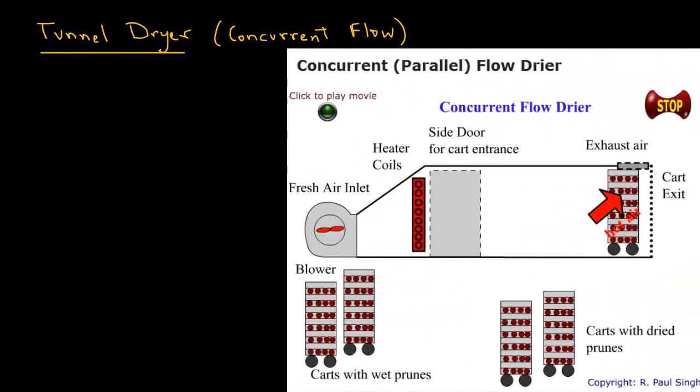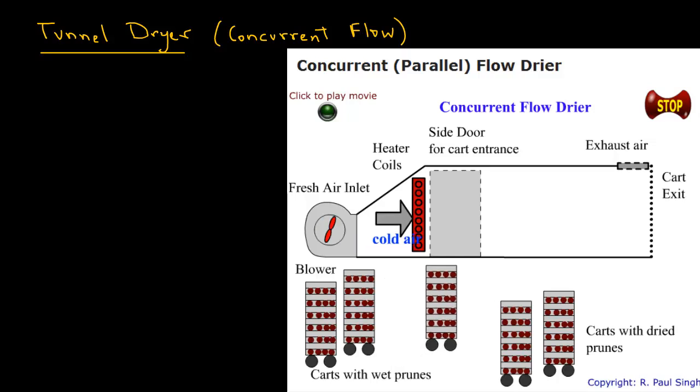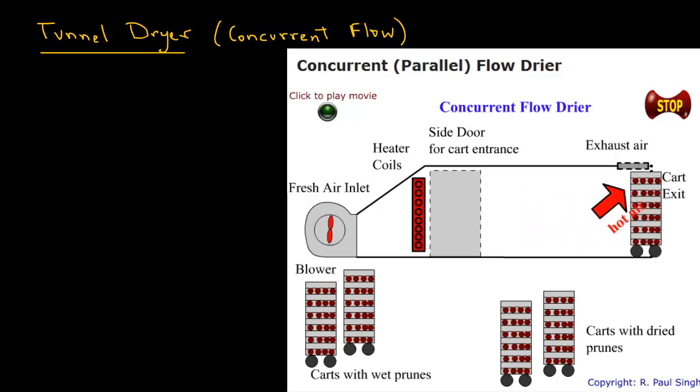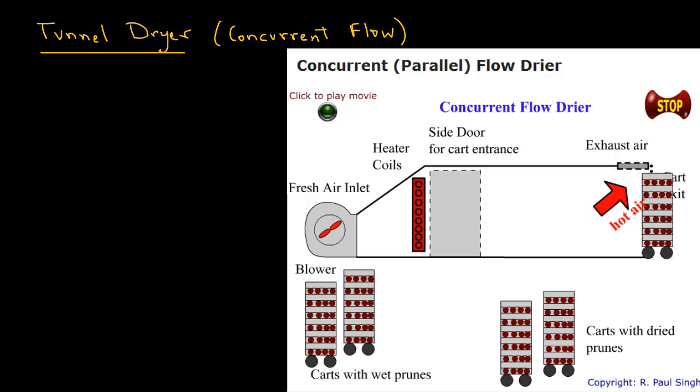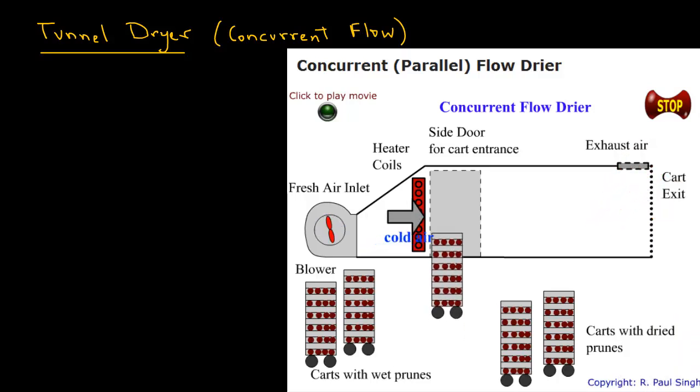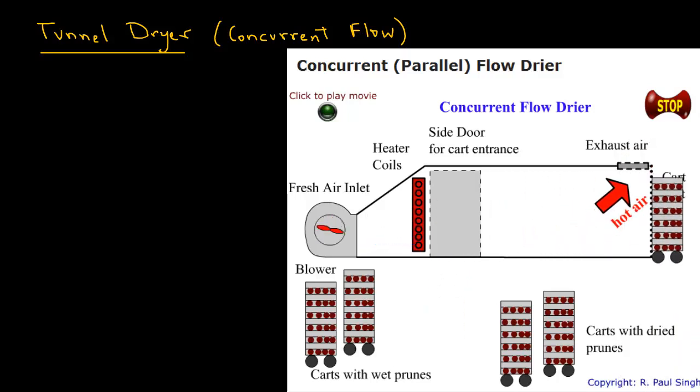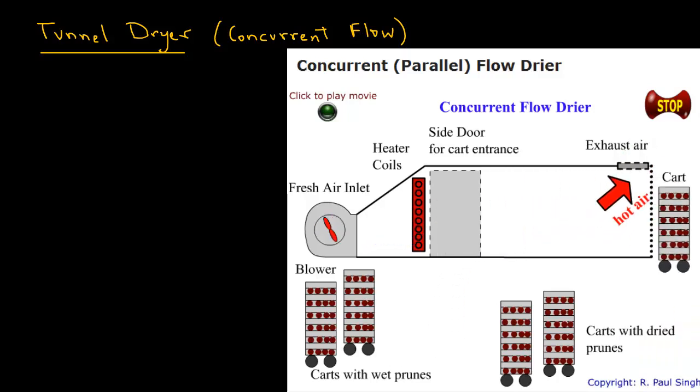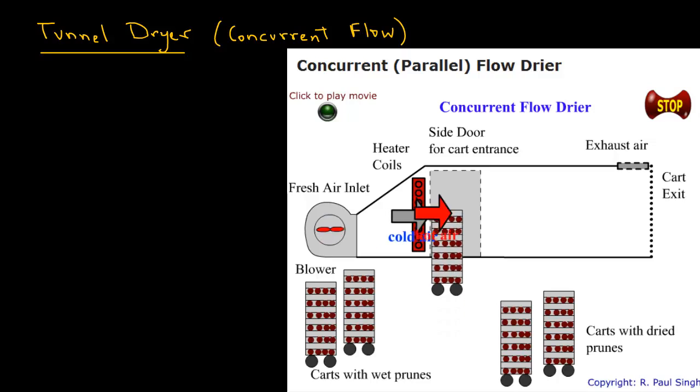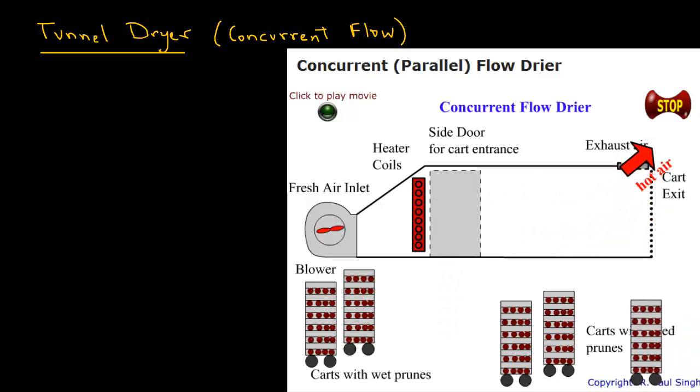Tunnel dryers are commonly used for drying products like grapes and also for prunes. In this case, there is a long tunnel. Food is placed on carts and we have heated air that is blown through the product. If the direction of airflow is the same as the movement of the product, then this type of a dryer is called a concurrent flow dryer.